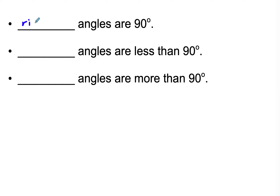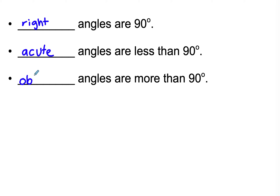Right angles are ones that are 90 degrees. Acute angles are less than 90 degrees. And obtuse angles are ones that are more than 90 degrees.